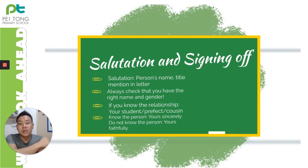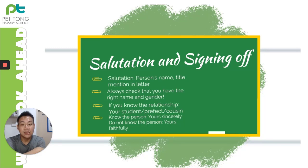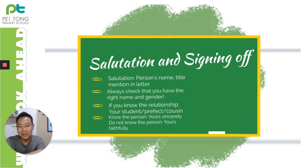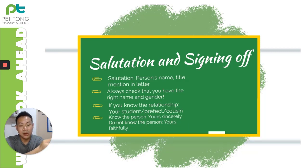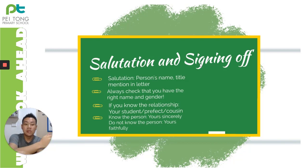For salutation and signing off, make sure you mention the person's name and title, and always check that you have the right name and gender — do not change a Mr. to a Mrs. or vice versa. If you know the relationship, you can sign off as 'your student,' 'your prefect,' 'your cousin,' or 'your friend.' If you do not know the person, use 'yours faithfully.' If you know the person and it is a formal letter, use 'yours sincerely.'